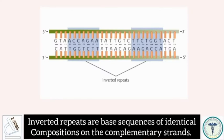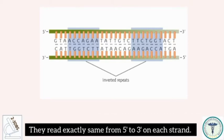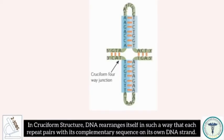Inverted repeats are base sequences of identical composition on the complementary strands. They read exactly the same from 5' to 3' on each strand. In cruciform structures, DNA rearranges itself in such a way that each repeat pairs with its complementary sequence on its own DNA strand.